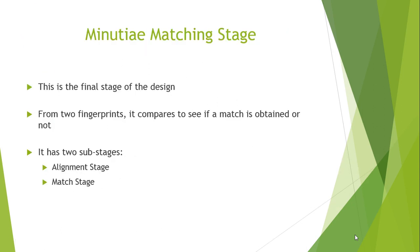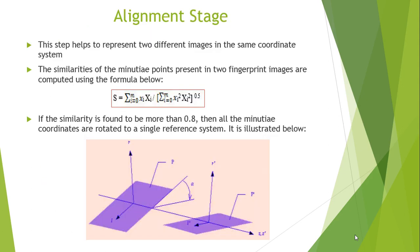Finally, we come to the final stage of our design: the minutiae matching stage. From the two fingerprints, it compares to see if a match is obtained or not, and it has two sub-stages: the alignment stage and the match stage. The alignment step helps to represent two different images in the same coordinate system. The similarities of the minutiae points present in the two fingerprint images are computed using the given formula. If the similarity is found to be more than 0.8, then all the minutiae coordinates are rotated to a single reference system, as illustrated in the given diagram.